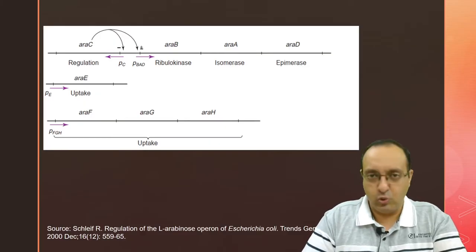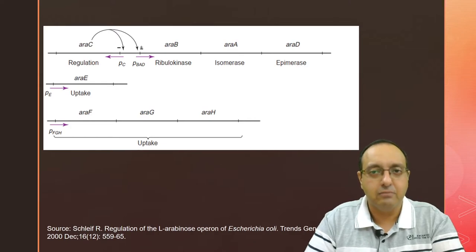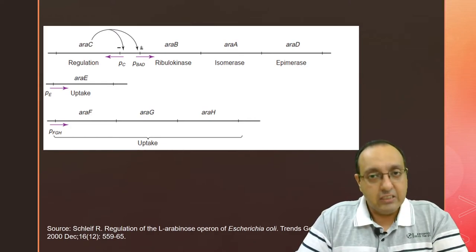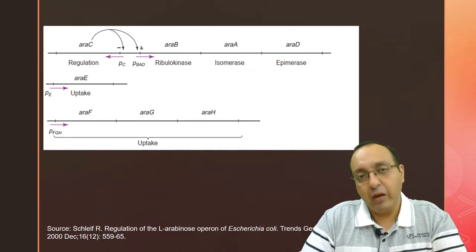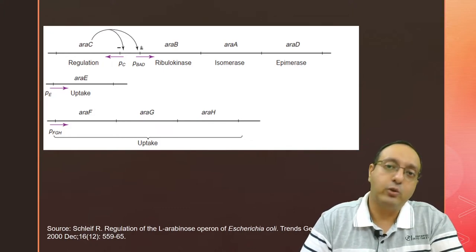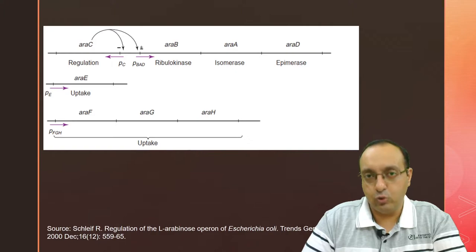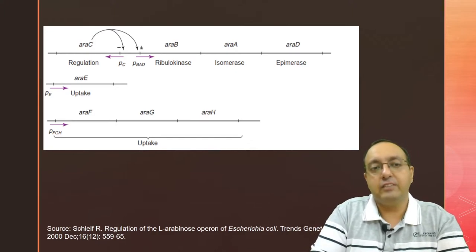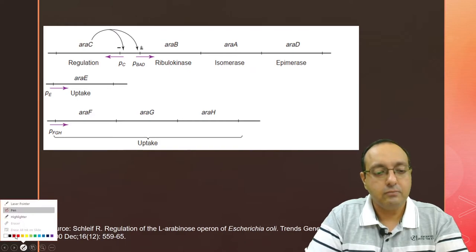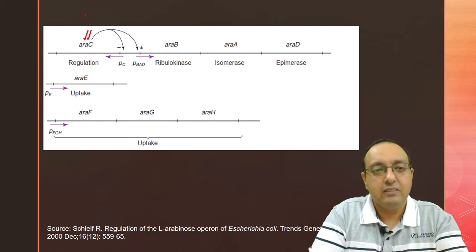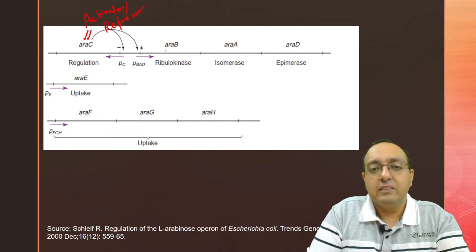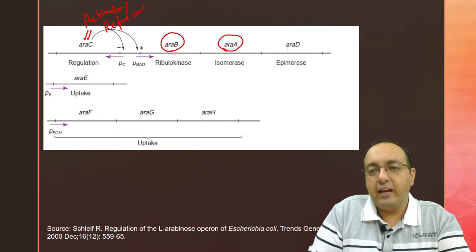Arabinose is a pentose sugar, a carbohydrate with a five carbon backbone. There are multiple genes which encode proteins involved in importing arabinose into the cell as well as metabolizing it. Let's introduce the cast of characters first. We have the araC protein, the activator/repressor. Then there's one operon: araB, araA, and araD.